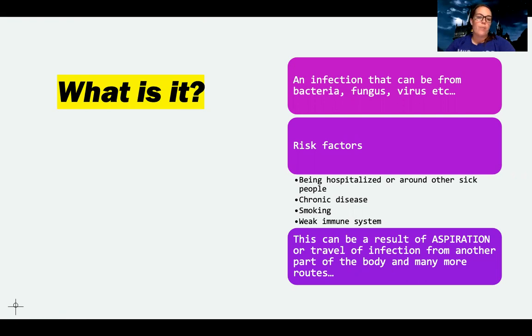General risk factors or people that are more at risk for getting pneumonia are those that are hospitalized or around other sick patients, chronic disease like heart disease, chronic lung disease, COPD and asthma. Being a smoker puts you more at risk for pneumonia and then also having a weak immune system.